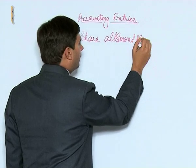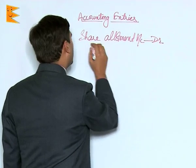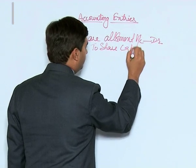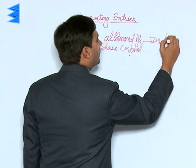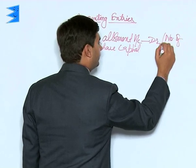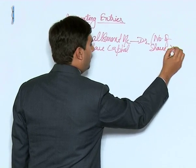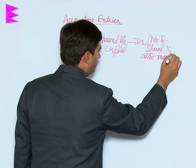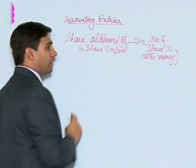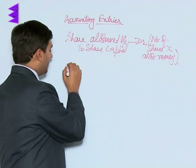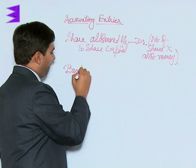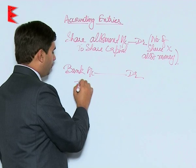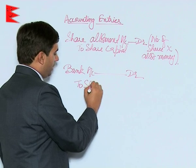The allotment entry is: number of shares into allotment money. Whenever the amount is received, the entry would be: bank account debited to share allotment.